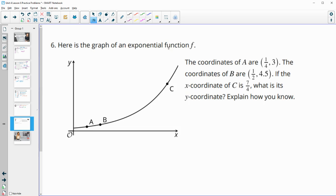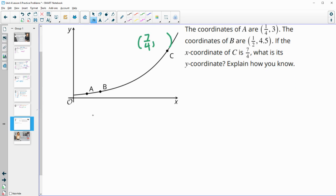Number six, here's a graph of this exponential function. The coordinates are one fourth, three, one half, 4.5. And then we want to find the coordinates of C, which is at seven fourths and then something. So what is the Y coordinate and explain how you know.